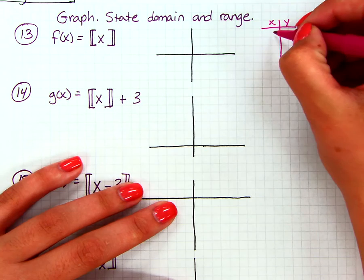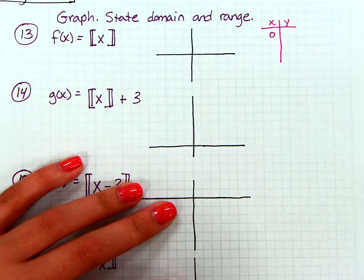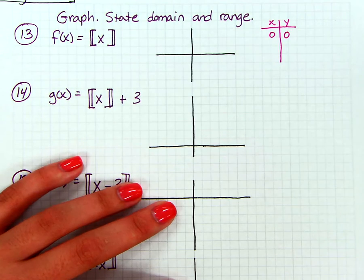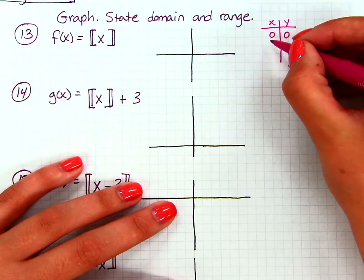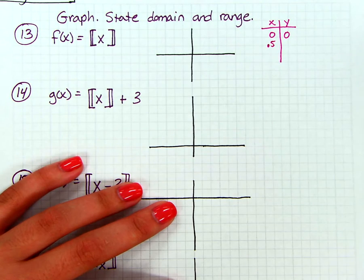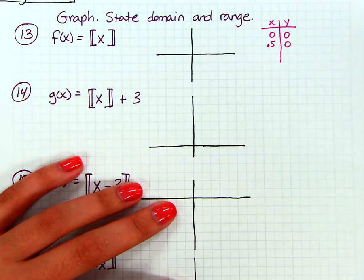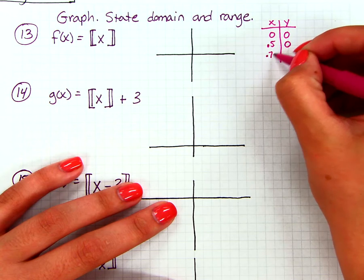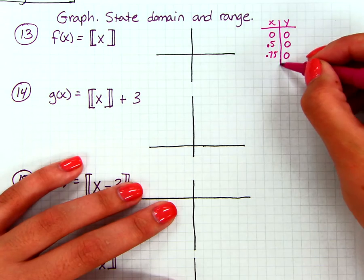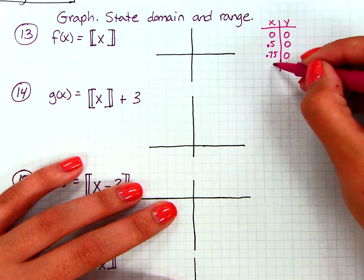So 0 is usually a good place to start. So if I choose 0 and I substitute it in and I round down to our next integer, well we're just going to get 0. Let's say I choose 0.5. So again, we're always going to round down, so that means that we would round back to 0. Same thing if I choose 0.75, that would still be 0. So it looks like my next change in y is going to be at 1, when I choose 1.